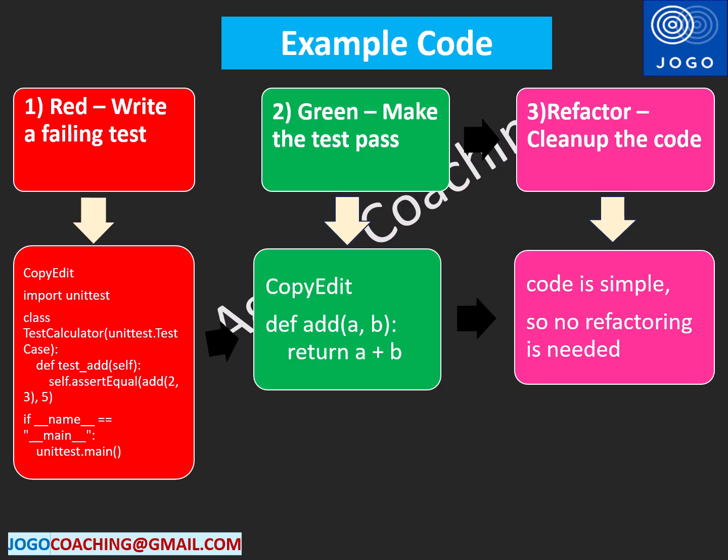Step one — Red: write a failing test. The first step is to write a failing test case for the add function in Python. Initially, the add function does not exist, so the test will fail. If you see this code snippet, we don't have any add functionality, but the add function is called within this code snippet. So this is the test case, and since we don't have the add function, it's failing.